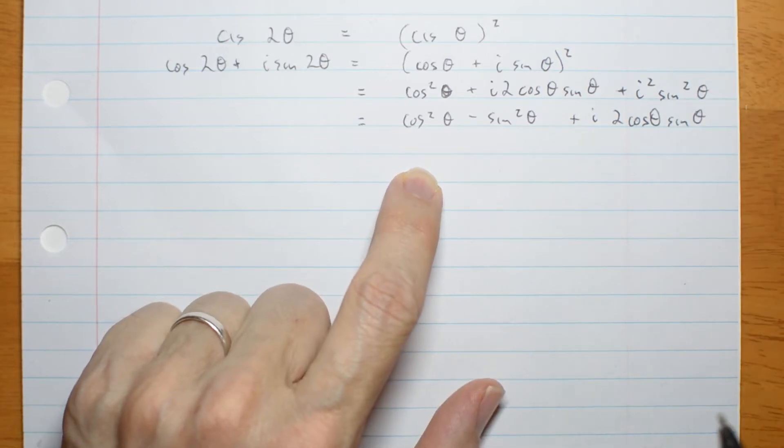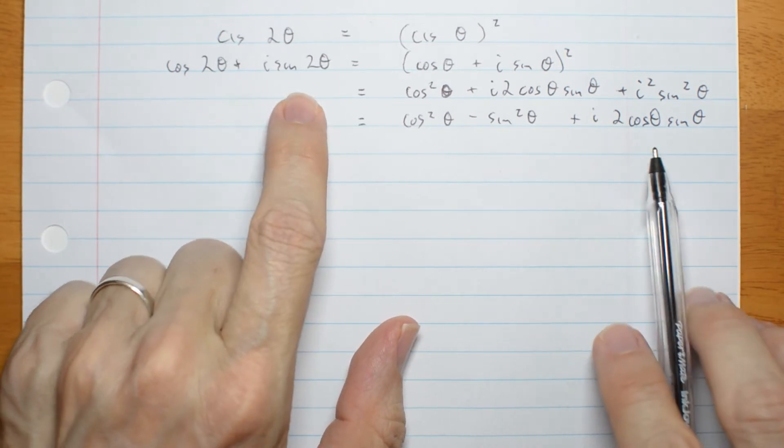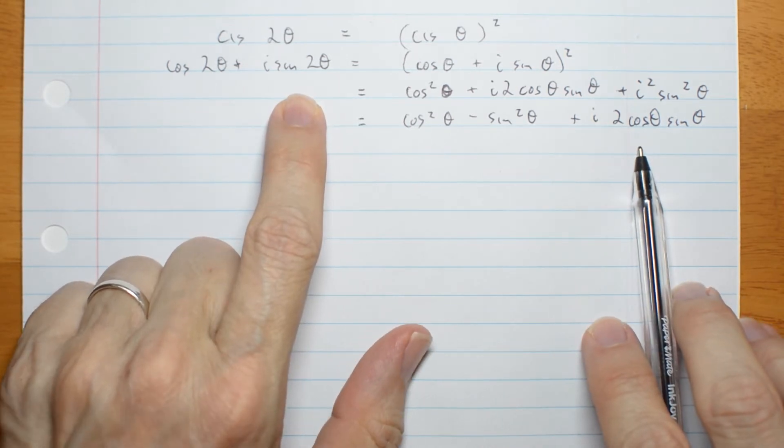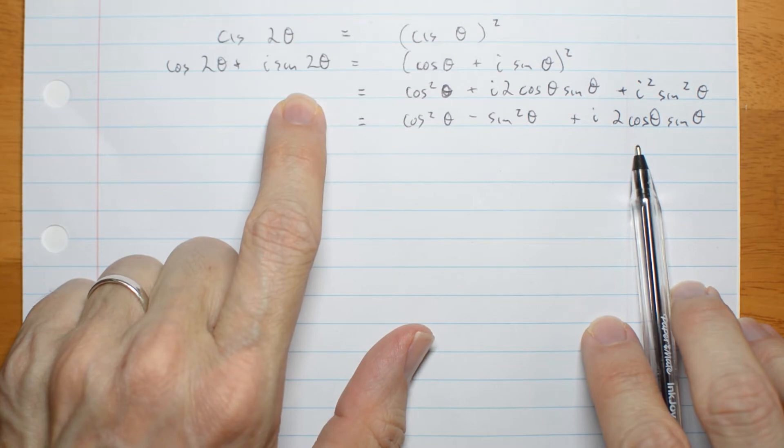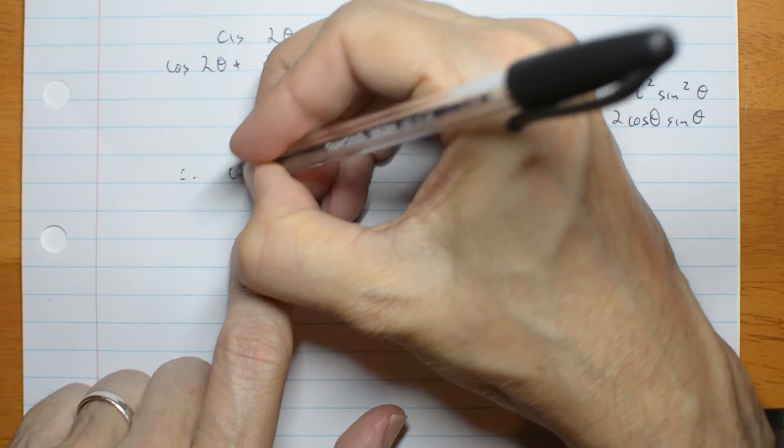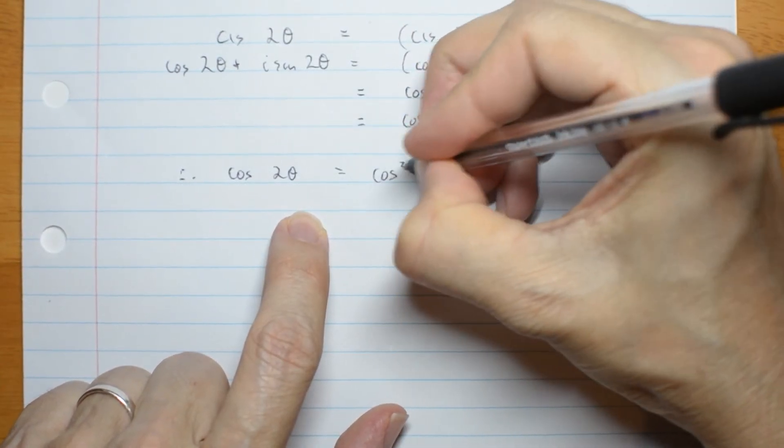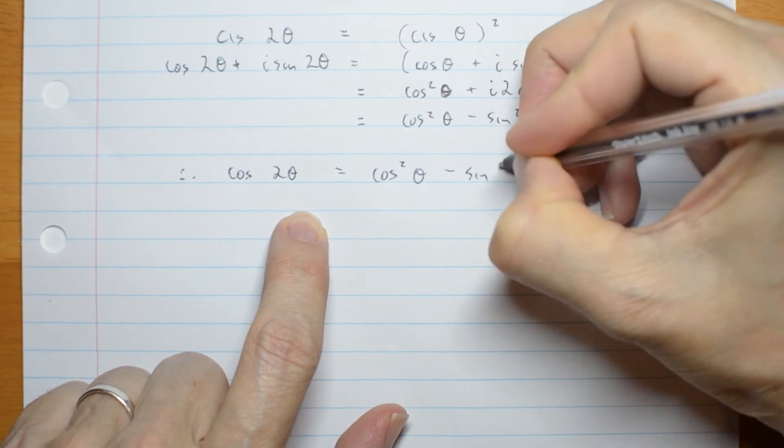Now, something interesting happens. The real parts here must be the same and the complex parts must be the same. Sorry, the imaginary parts must be the same. So that means cos 2 theta is cos squared theta minus sine squared theta.